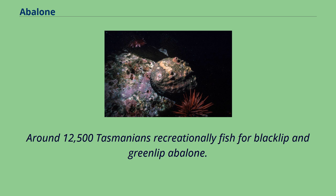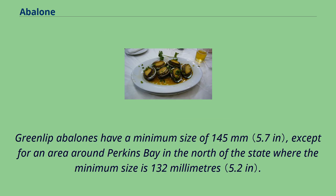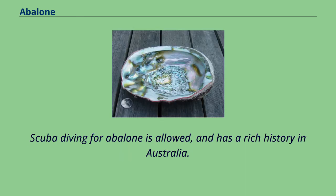Around 12,500 Tasmanians recreationally fish for black-lip and green-lip abalone. For black-lip abalone, the size limit varies between 138 mm for the southern end of the state and 127 mm for the northern end. Green-lip abalones have a minimum size of 145 mm, except for an area around Perkins Bay in the north of the state where the minimum size is 132 mm. With a recreational abalone license, the bag limit is 10 per day, with a total possession limit of 20. Scuba diving for abalone is allowed and has a rich history in Australia.